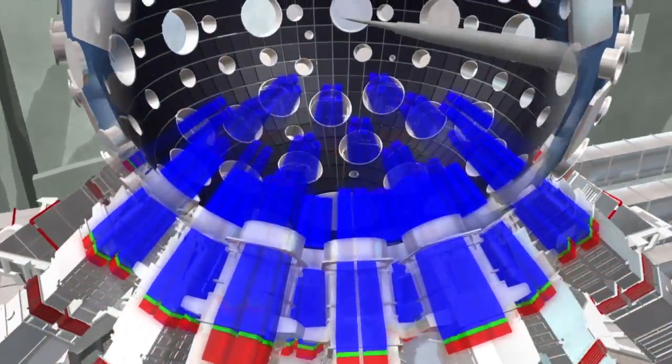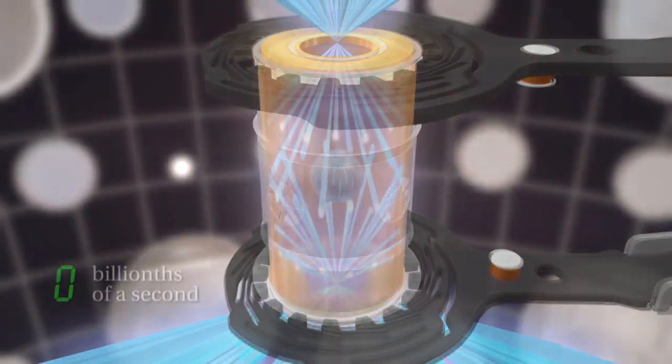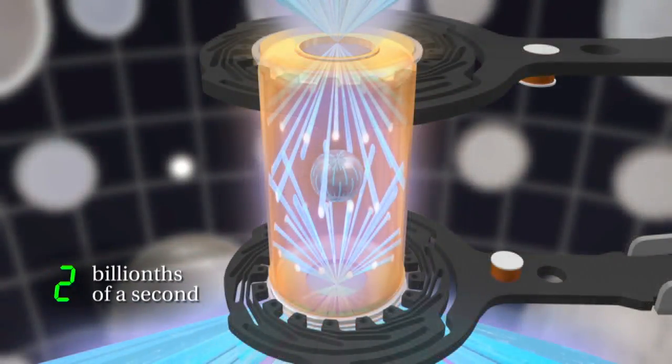After traveling nearly a mile inside the NIF while they get amplified up in energy, all 192 laser beams enter the hohlraum through two holes at the top and bottom and are precisely aligned to hit a particular spot on the inside wall of this little cavity.